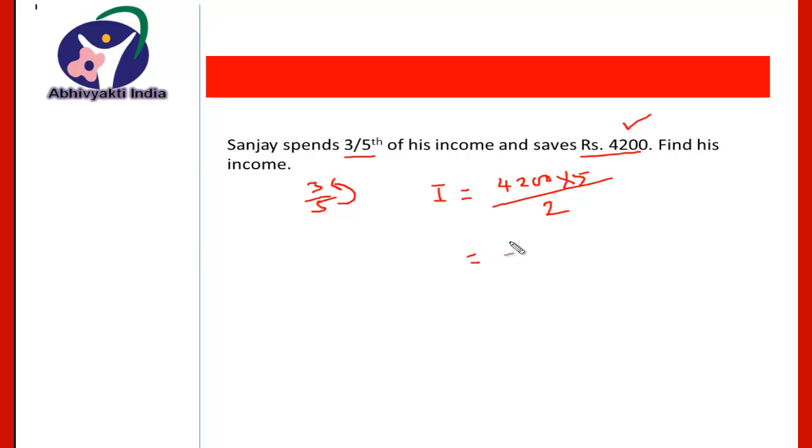So if you solve this, you will get it 2,100 multiplied by 5. So that it will be 5 zeros are 0, 5 zeros are 0, 5 ones are 5, and 5 twos are 10. So it will be 10,500.